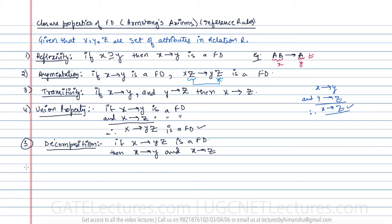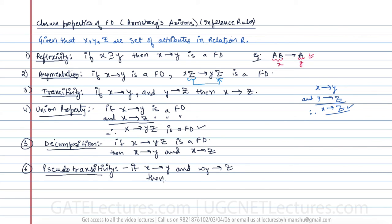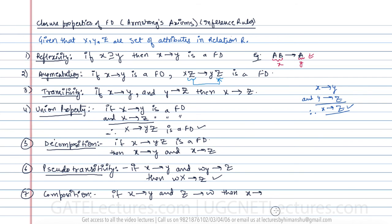The next one is called pseudo-transitivity. If X determines Y and WY determines Z, then WX determines Z also holds. The next property is the composition property, which states: if X determines Y and Z determines W, then XZ determines YW also holds.